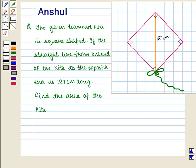Hello and welcome to the session. In this session we are going to discuss the following question. The question says that the given diamond kite is square shaped. If the straight line from one end of the kite to the opposite end is 127 cm long, find the area of the kite.